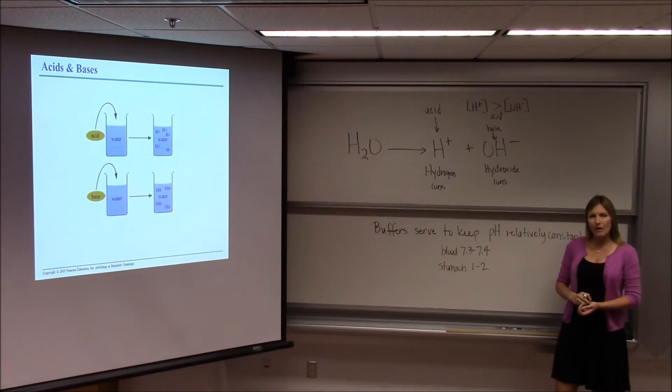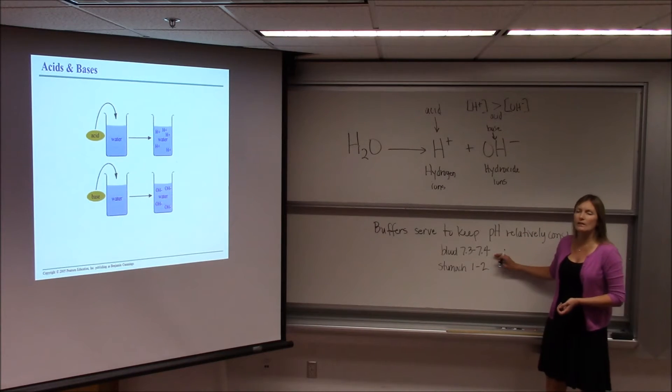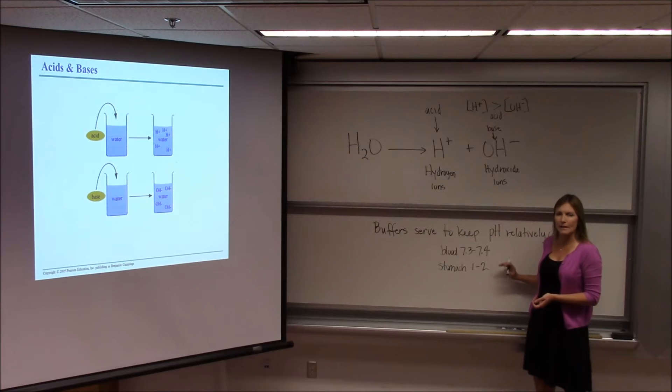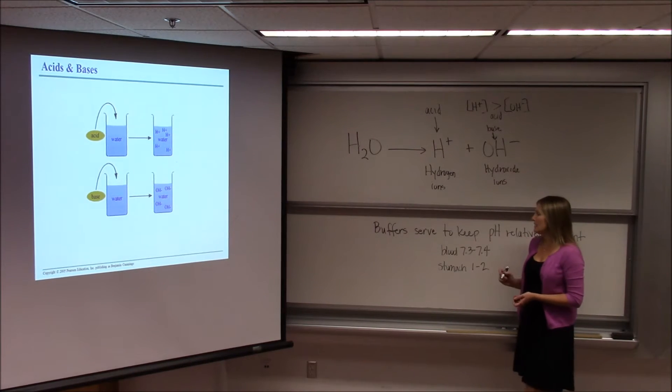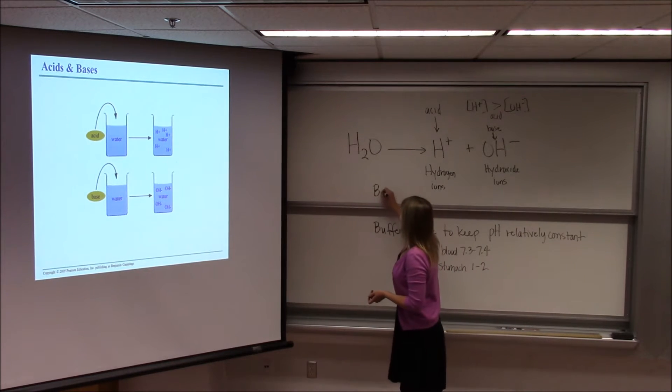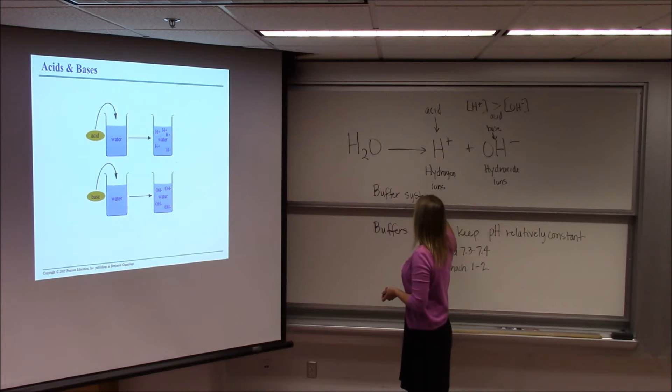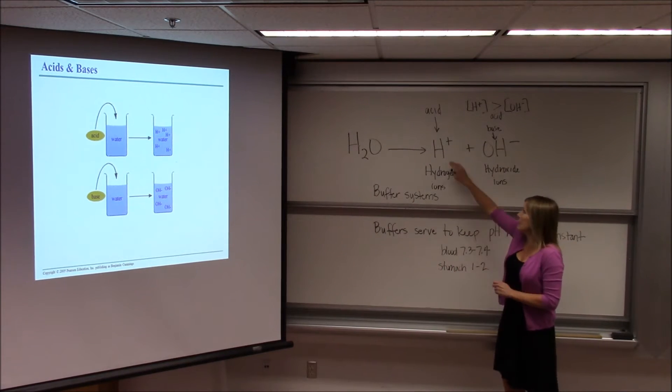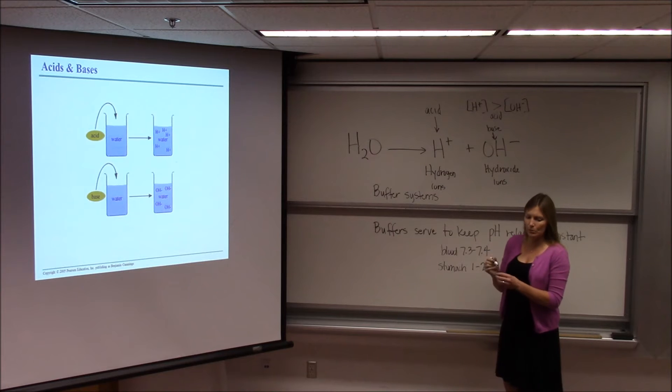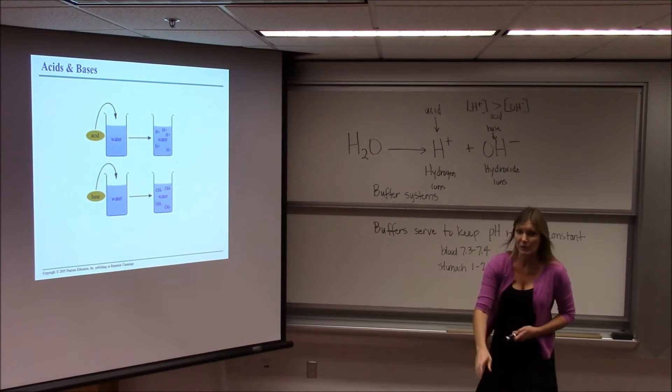So the role of buffers is to keep pH constant for whatever normal is in that environment. The way buffers work, it's usually called a buffer system, because buffer systems can adjust regardless of what the situation is. In other words, if it becomes too acidic, the buffer system will shift one direction. And if it becomes too basic, the buffer system will shift the other direction.